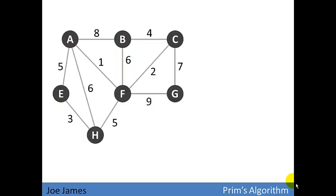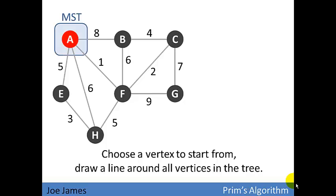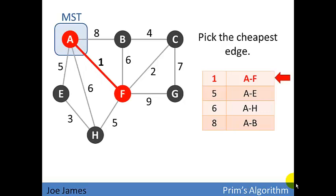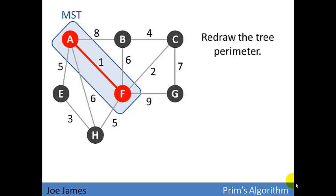So let's take a more complicated graph. We're going to choose a vertex to start from. Again, we'll start from A. You can actually start from any vertex you like. It's going to work out the same. Draw a line around all the vertices in the tree, which at this point is just vertex A. Then we're going to list all out edges from the tree. And the cheapest edge is obviously edge one, going to vertex F. So we're going to pick that vertex, F, edge one.